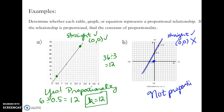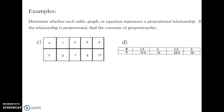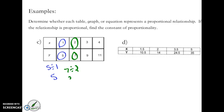Now let's check some tables. When we check a table, we divide each y by its corresponding x. Here, 5 divided by 1 equals 5. In the next row, 7 divided by 2 equals 3.5. At this point we don't even need to keep going — they're not the same value, so it's not proportional.